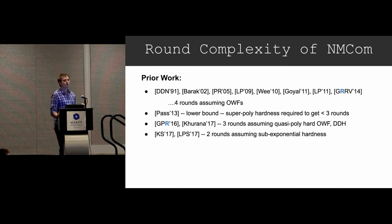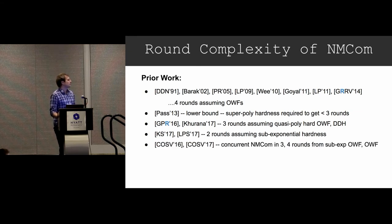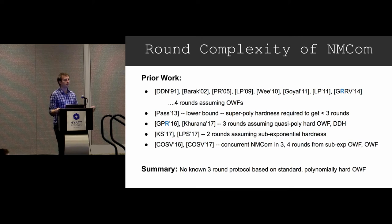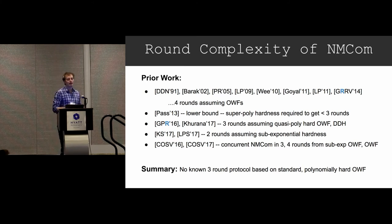One uses quasi-polynomial hard one-way functions, and one uses number-theoretic assumptions such as DDH. There are some really nice works getting two-round non-malleable commitments, bypassing this lower bound by making use of sub-exponential hardness. And there are other nice works getting round-efficient non-malleable commitments with stronger notions of non-malleability. But to summarize, before this work there was no three-round protocol based on just normal polynomial hard one-way functions — any protocol with fewer than four rounds either made use of a super-polynomial hardness assumption or some number-theoretic assumption.